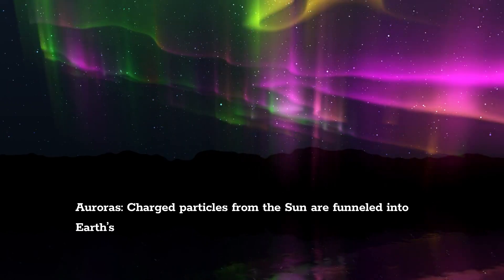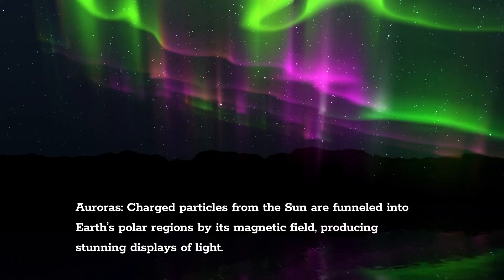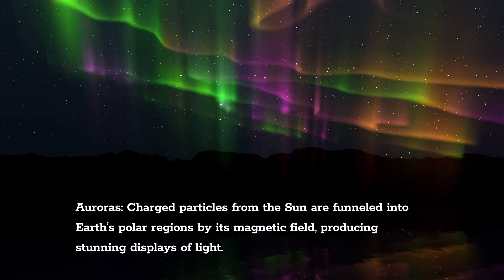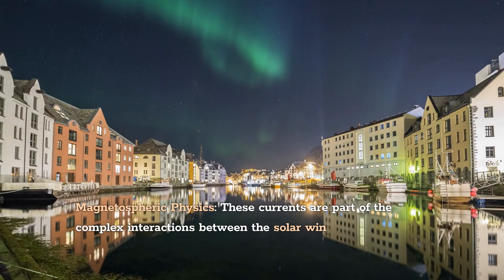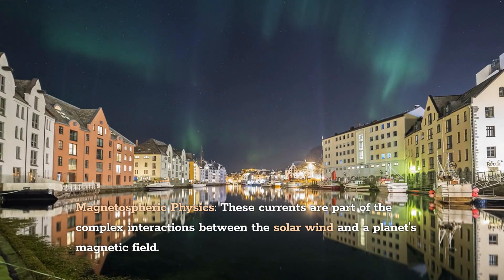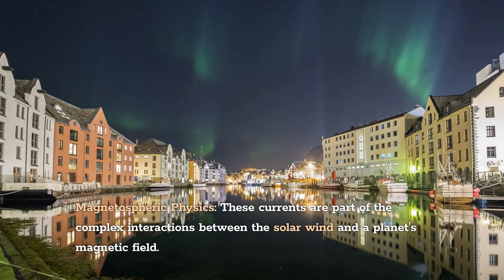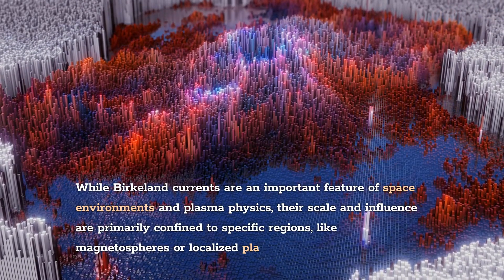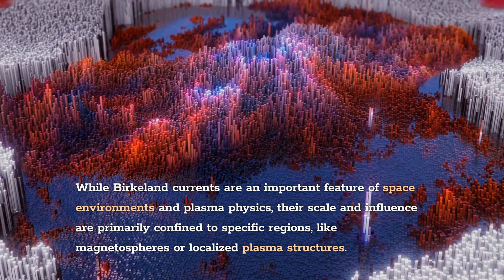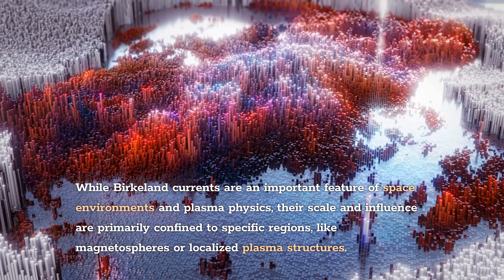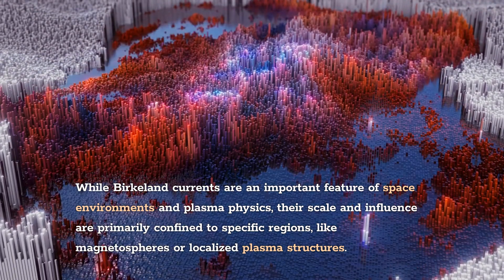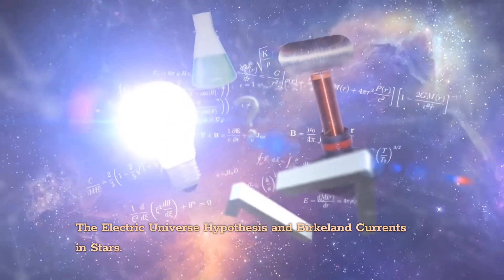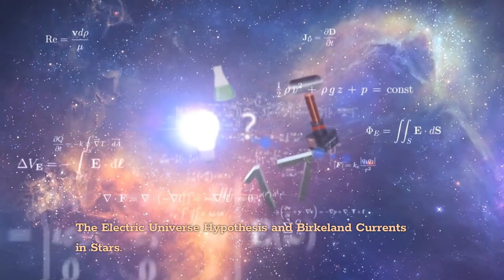Birkeland currents are involved in space plasma phenomena like auroras, where charged particles from the sun are funneled into Earth's polar regions by its magnetic field, producing stunning displays of light. These currents are part of the complex interactions between the solar wind and a planet's magnetic field. While Birkeland currents are an important feature of space environments and plasma physics, their scale and influence are primarily confined to specific regions like magnetospheres or localized plasma structures.